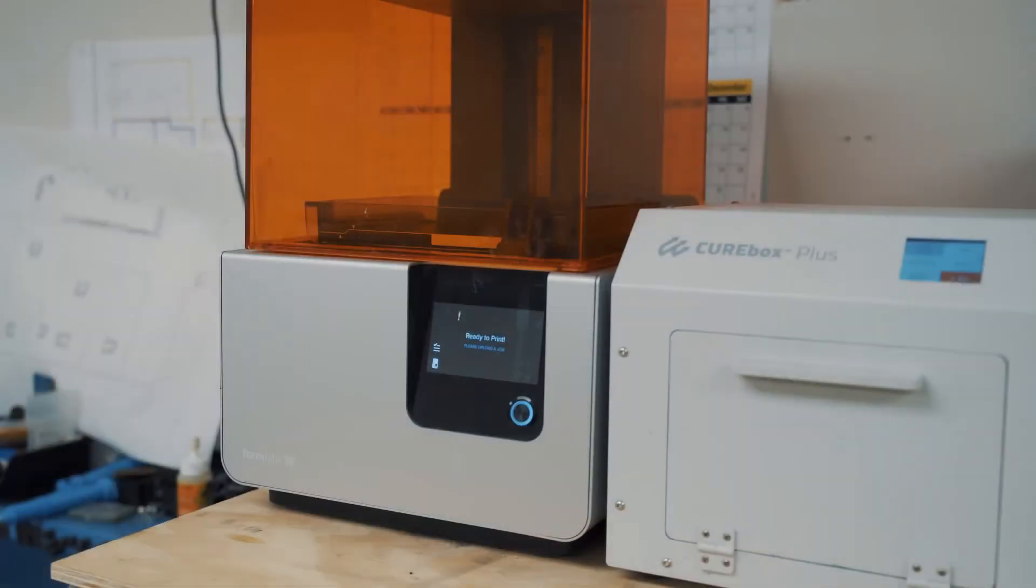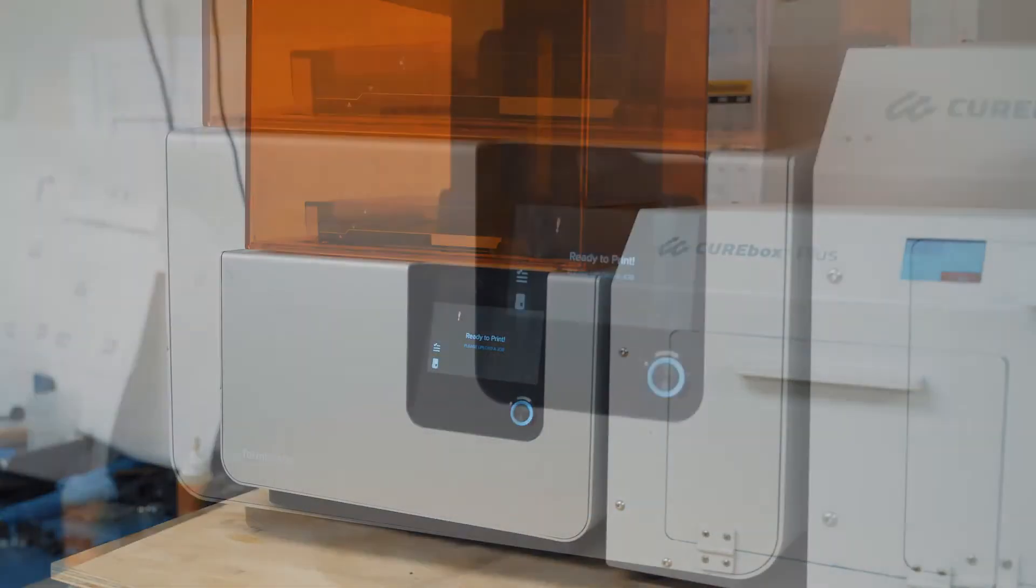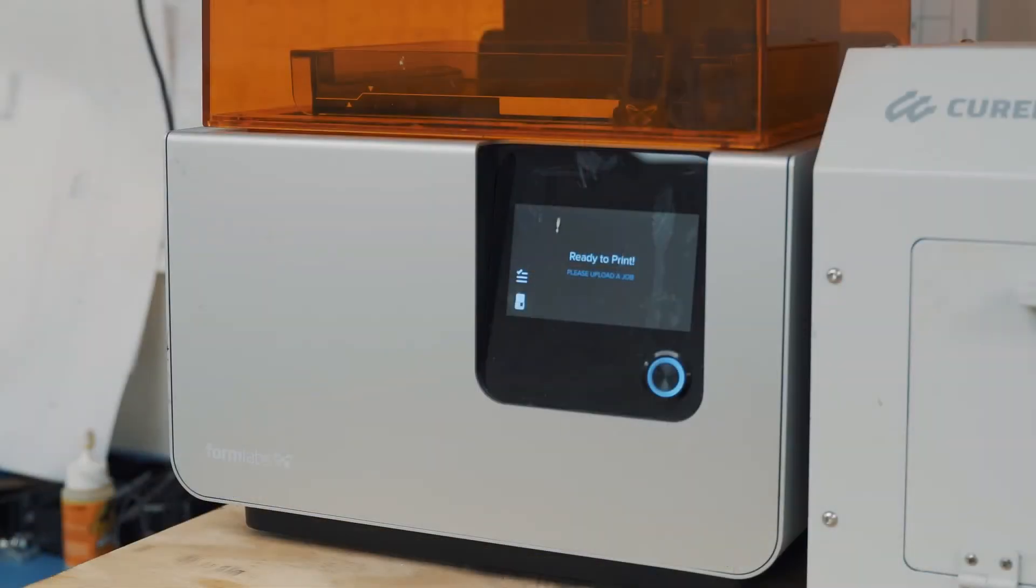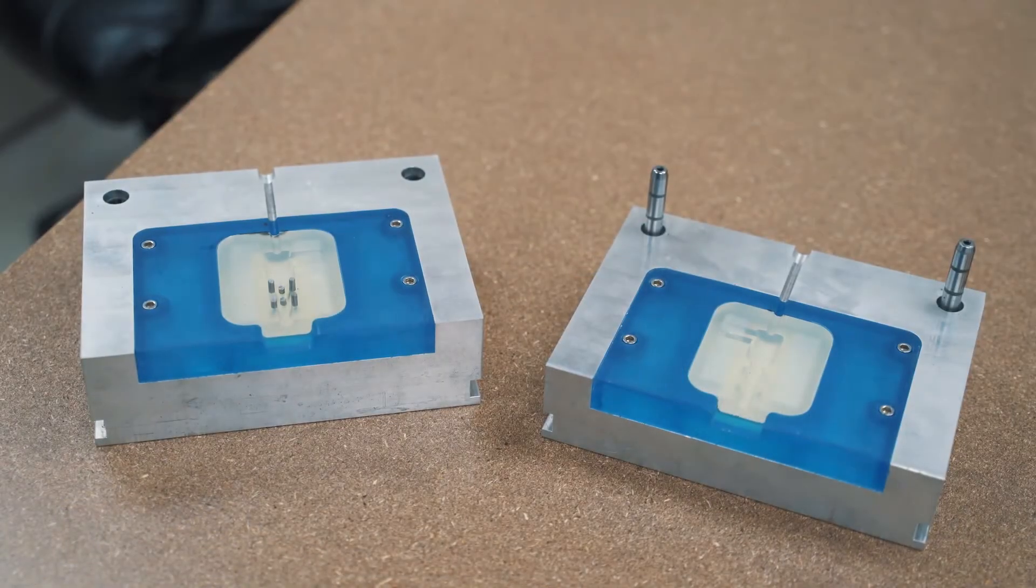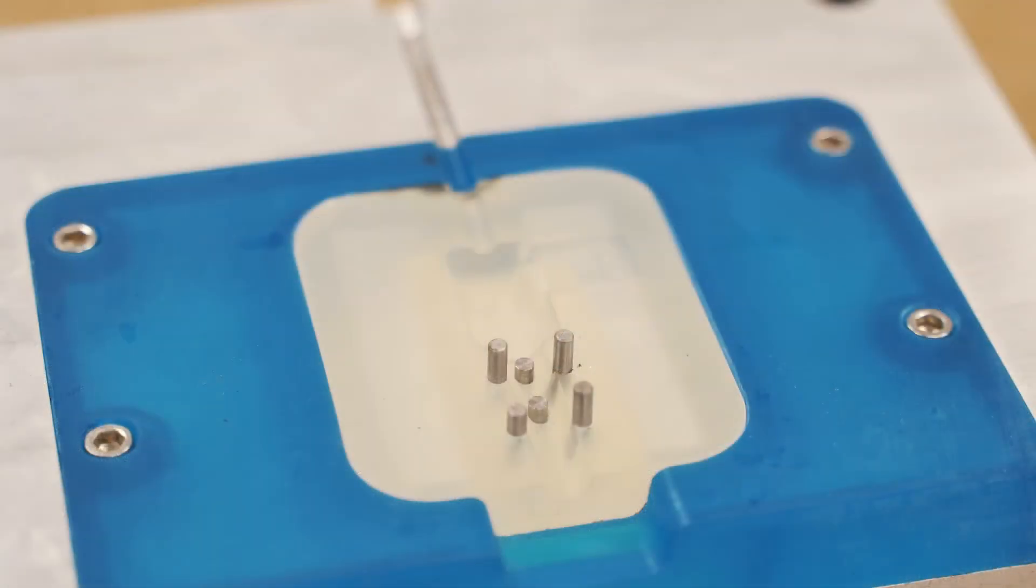For lower volume overmolding, we can design and produce 3D printed molds using high temperature plastics. These cost a few hundred dollars and are good for about 100 shots.